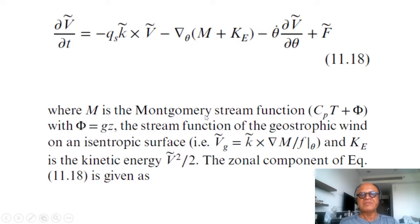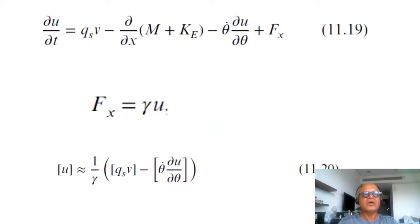And divergence of M plus KE where KE is the kinetic energy of the flow on the isentropic surface. M is something called Montgomery stream function which is CPT plus phi where phi is the geopotential GZ. That's like a dry static energy kind of term minus theta dot, the heating term. So this is the generation term and this is the friction term, so that diabatic heating term and the dissipation term.